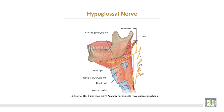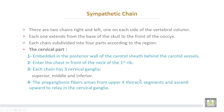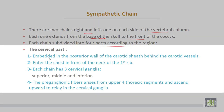The hypoglossal nerve also gives the descending hypoglossal, which shares in the formation of the ansa cervicalis. The diagram shows the hypoglossal nerve — the twelfth cranial nerve — joined by the first cervical nerve and distributing through it to the thyrohyoid muscle, geniohyoid muscle, and giving the descending hypoglossal, which shares in the ansa cervicalis. Regarding the sympathetic chain: there are two chains, right and left, one on each side of the vertebral column, extending from the base of the skull to the front of the coccyx. The chain is subdivided into four parts according to region; the cervical part is embedded in the posterior wall of the carotid sheath, behind the carotid vessels, and enters the chest in front of the neck of the first rib.